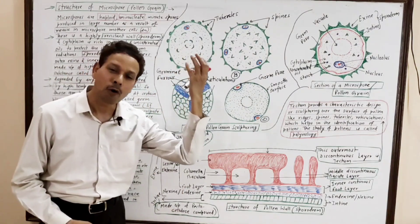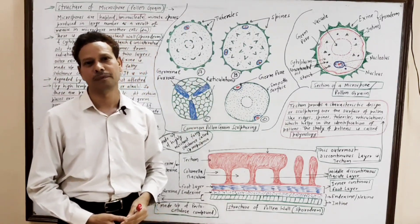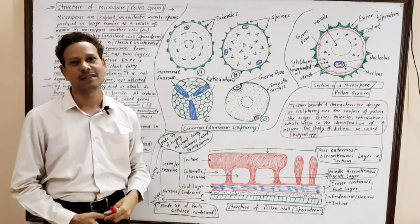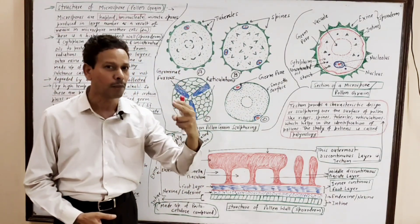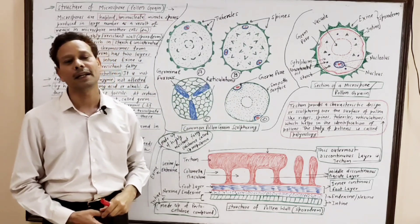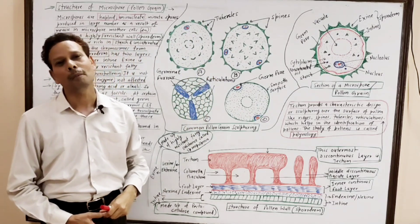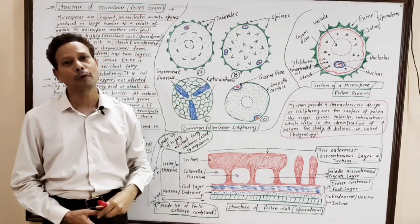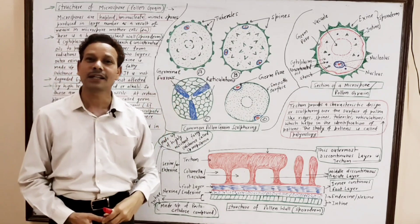Pollen products: pollens are a rich source of proteins, carbohydrates, and fats, so they are used as food supplements. Pollen products are used in the form of tablets or serums and are given to athletes to enhance their performance, as well as to racehorses. Pollen products are also used in cosmetics.